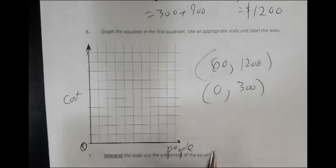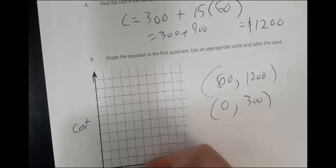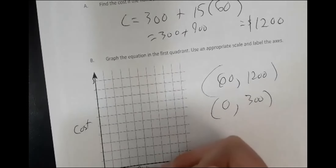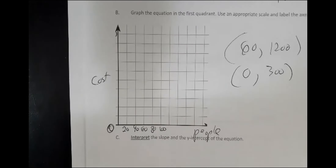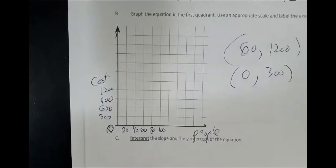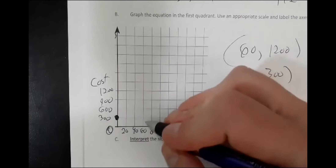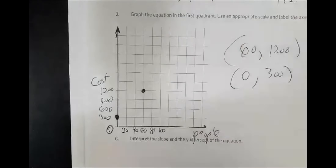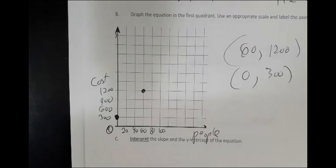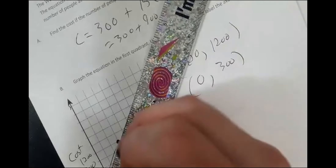It doesn't have to be perfect or exact, but we need to go from zero up to at least 60 for people. Going by 20s probably works well. I wasn't too picky as long as you had a semi-reasonable scale. The points are (0, 300) and (60, 1200), and this is what the line looks like.